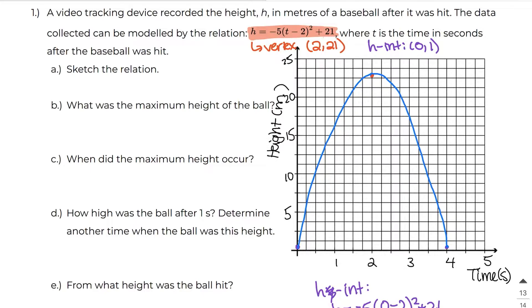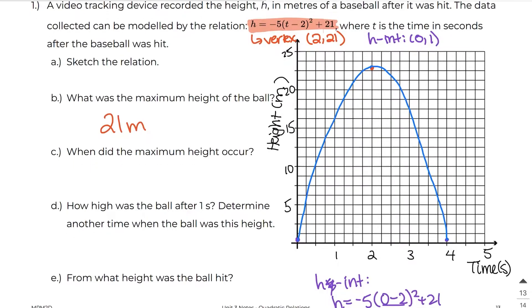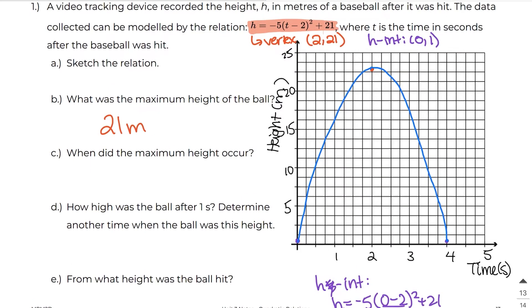The maximum height of the ball — we can find it from our graph or from our equation. We know that it is 21 meters. When did the maximum height occur? We know it's going to happen at 2 seconds, from our graph, from our vertex, and from our equation.